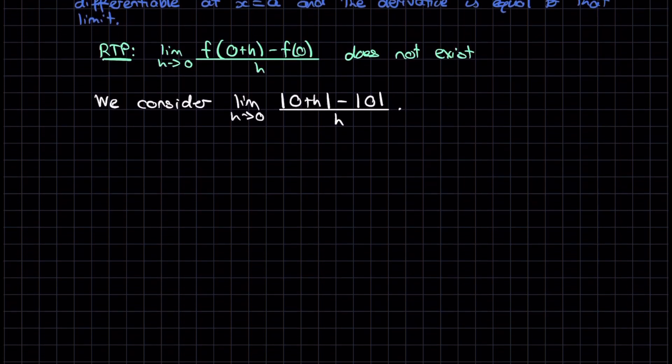So I'll have to consider what happens when h approaches 0 from below, and when h approaches 0 from above. And we have to show, if it's not differentiable, we're trying to show that that limit doesn't exist, which means those two one-sided limits are not equal to each other.